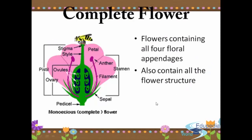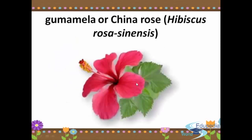First, we have the complete flower. A complete flower contains all four floral appendages and includes all the floral structures: stigma, petal, anther, filament, stamen, sepal, pedicel, ovary, ovules, and pistils — both male and female parts of the flower. As an example of a complete flower, we have the gumamela or China rose.